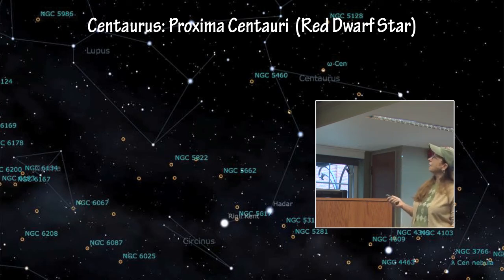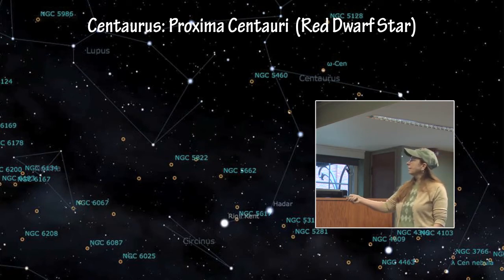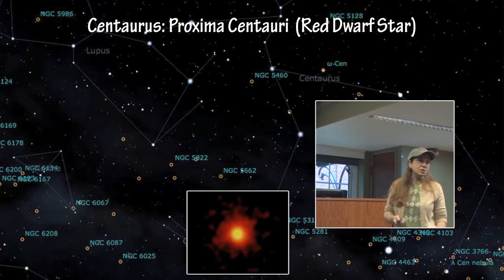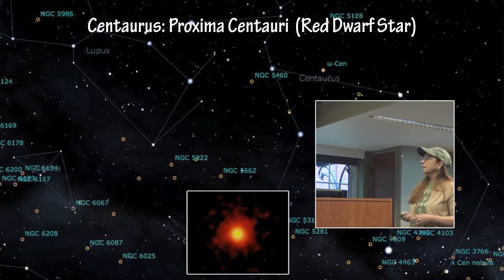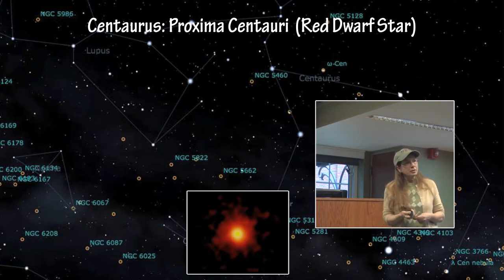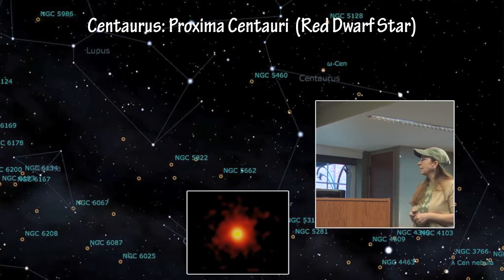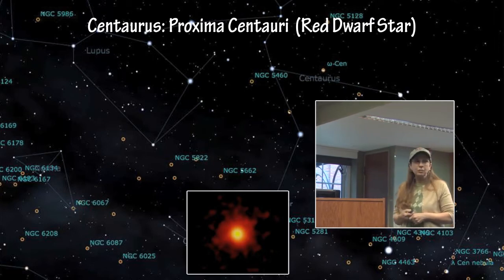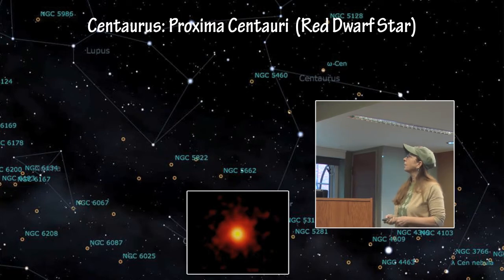In Centaurus, we have Proxima Centauri, which is a red dwarf star, and part of the Alpha Centauri system — a 5-6 star system. Proxima Centauri is the closest star to us in that system. It is a red dwarf, and since it takes about a trillion years for a red dwarf to evolve slowly into a white dwarf, the universe is not old enough for that to ever happen. Every star that formed as a red dwarf is still a red dwarf, and we will never see one turn into a white dwarf.